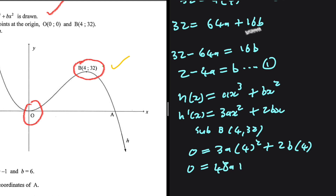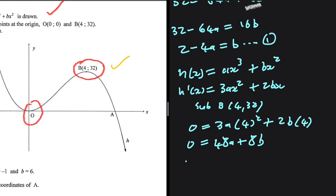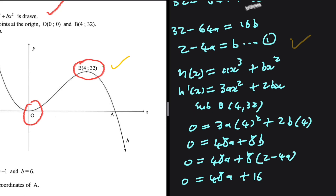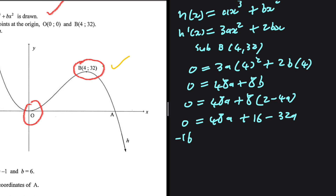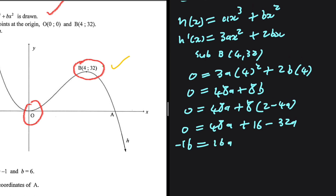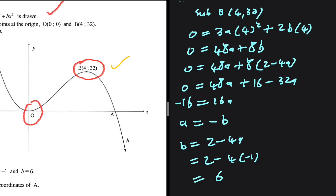Substituting equation 1 into b gives 0 equals 48a plus 8 times (2 minus 4a), so 0 equals 48a plus 16 minus 32a. Therefore minus 16 equals 16a, and dividing by 16 gives a equals minus 1. Then b equals 2 minus 4 times (minus 1), so b equals 2 plus 4, which gives b equals 6.